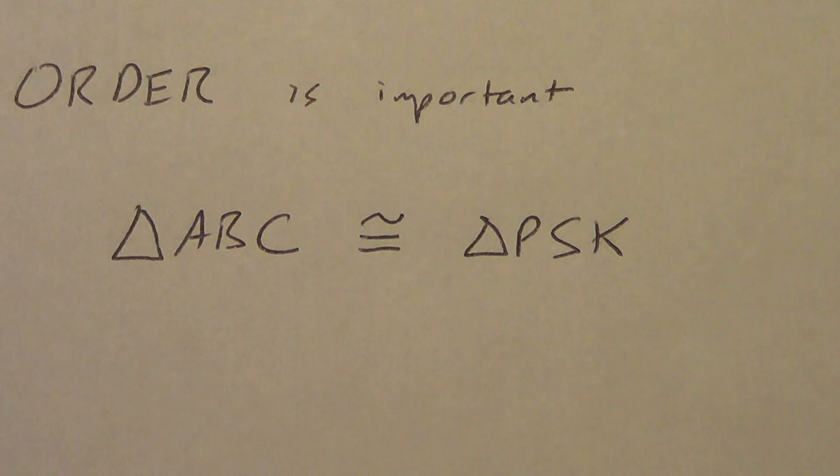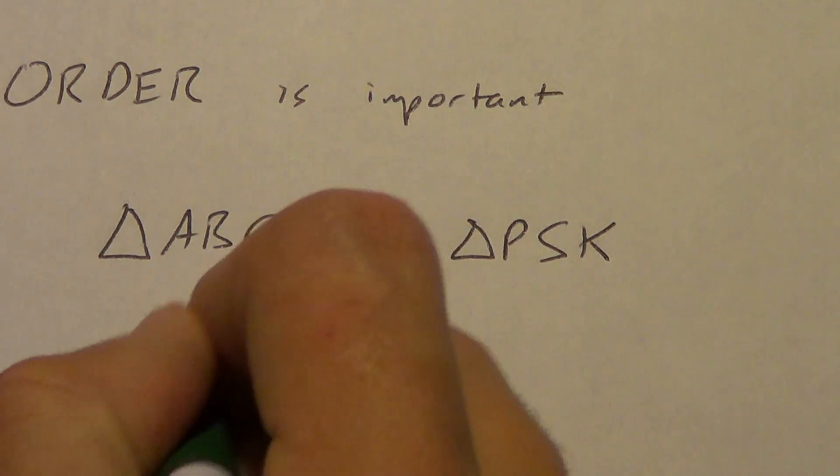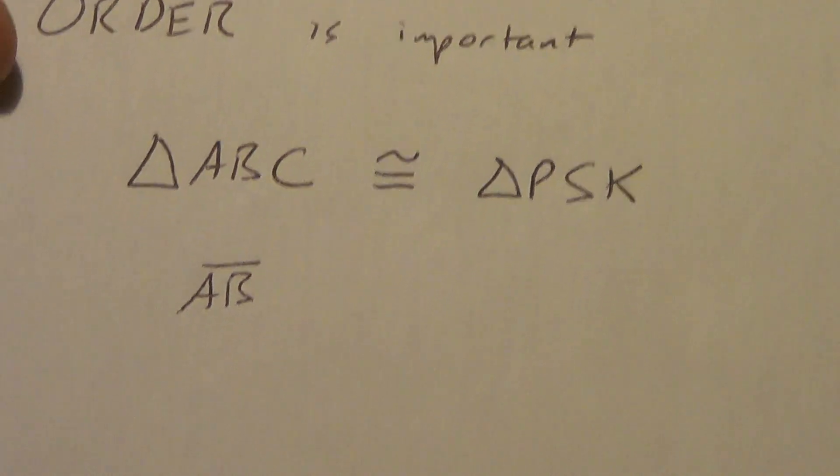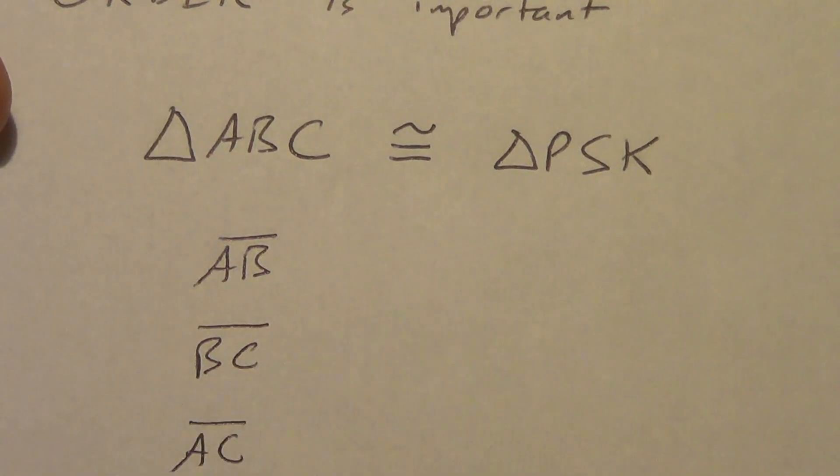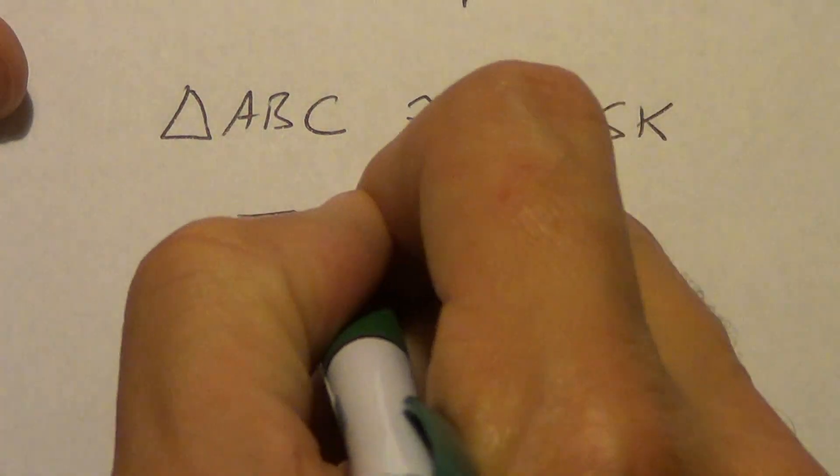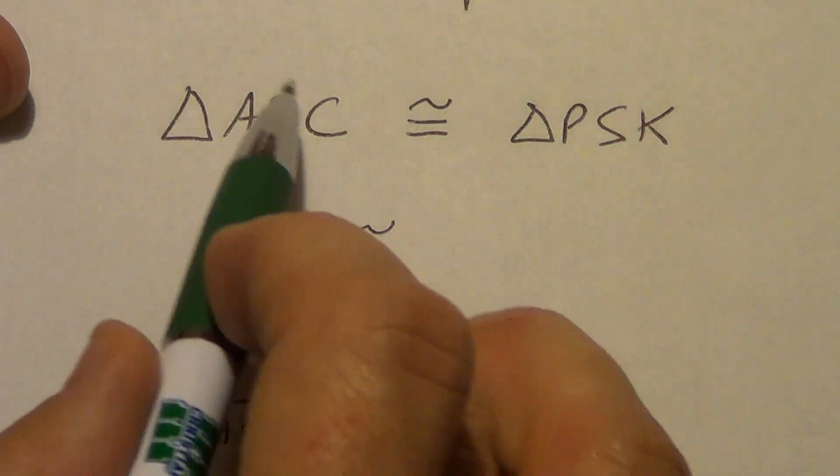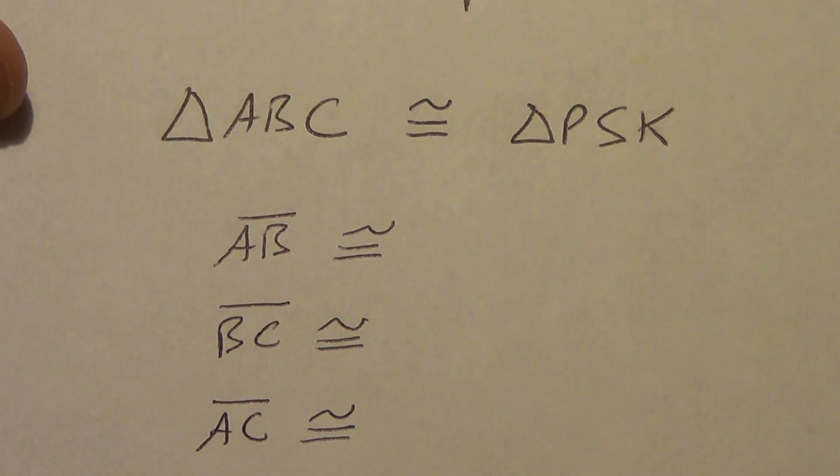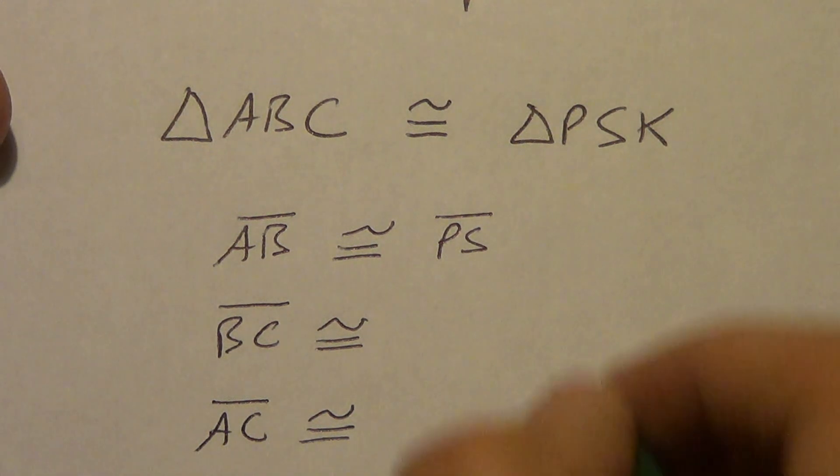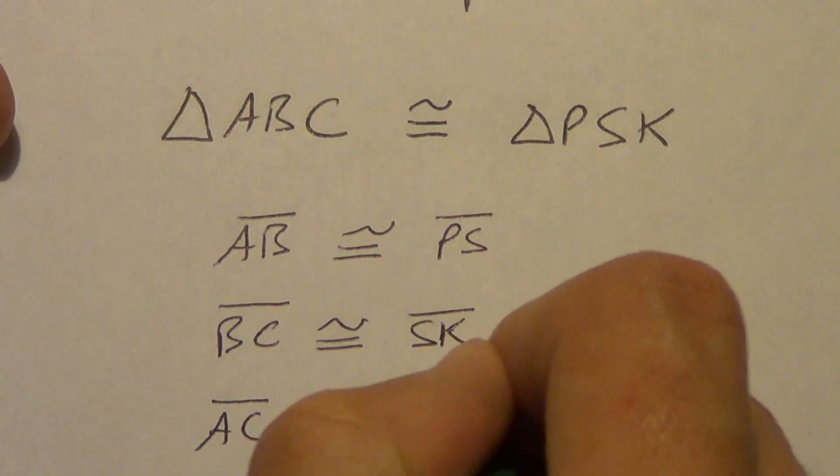Now, if I tell you this, and I don't even give you a picture, you can still tell me which sides are congruent. So, what would be one side of triangle A-B-C? One side would have to be side A-B, right? What would be another side? B-C. What would be another side? When we did A-B, we did B-C. Well, we would have to have A-C. Now, without even looking at a picture, knowing that order is important, what would A-B have to be congruent to? Well, look where A-B is located. It's the first and the second letters. So, what do you think it's going to be congruent to? It's going to be congruent to P-S. And what is B-C going to be congruent to? Now, it's going to be congruent to S-K. And A-C is going to be congruent to P-K.